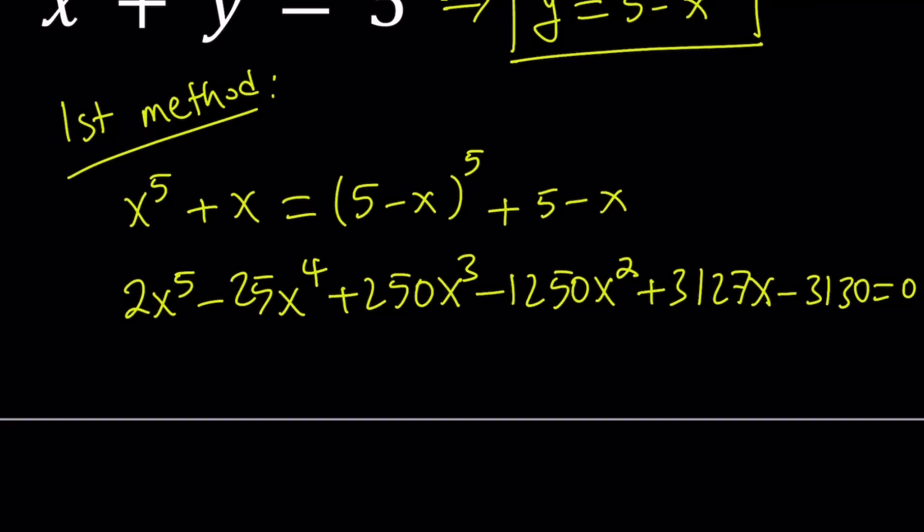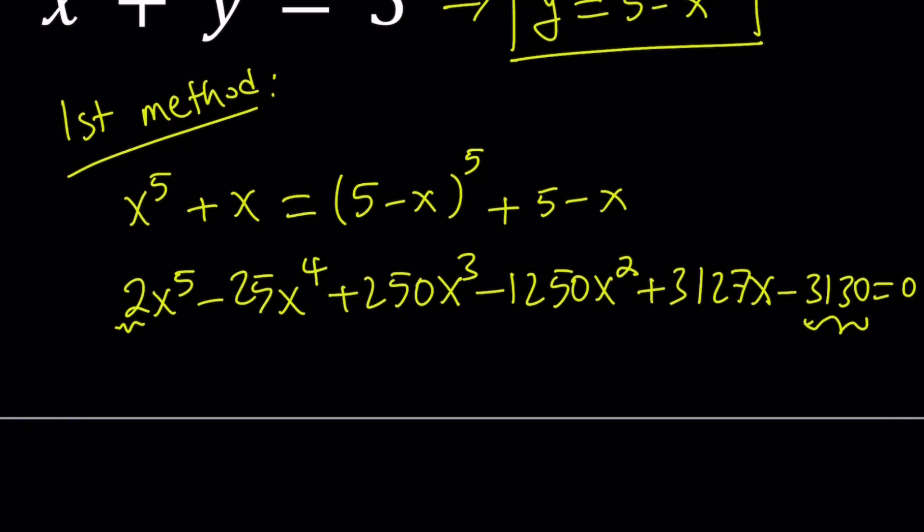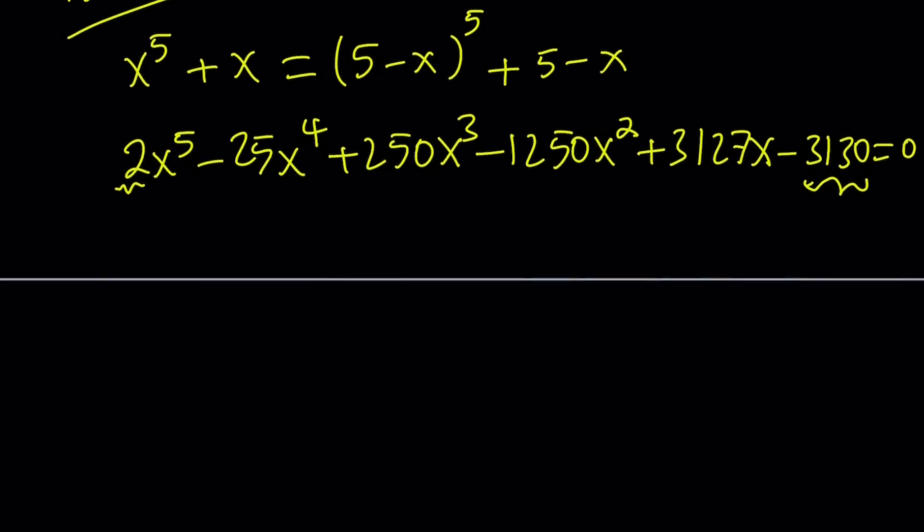and you can go ahead and try rational root theorem because there is a rational root, actually. That's what we're going to get at eventually. So you're going to be basically looking at factors of 3130 divided by factors of 2, all those combinations, and one of those, at least, is going to work. And you're going to find out, even after you do all the work and all that crazy stuff, that's probably going to take forever,